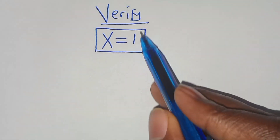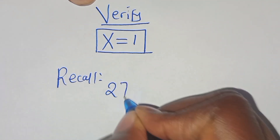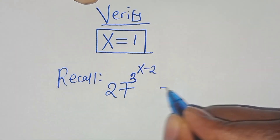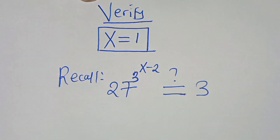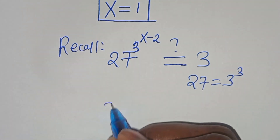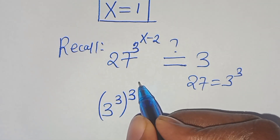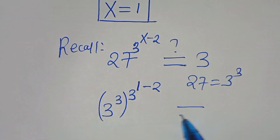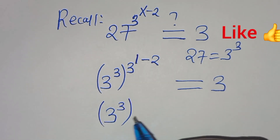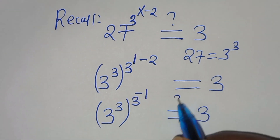Let's verify that x equals 1 satisfies the equation. We have 27 raised to the power of 3 raised to the power of x minus 2, which should equal 3. Expressing 27 as 3 to the power of 3, we get 3 to the power of 3, raised to the power of 3 raised to the power of 1 minus 2, which is 3 raised to the power of negative 1. This should equal 3.